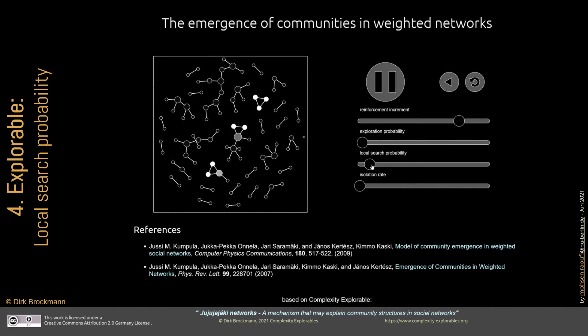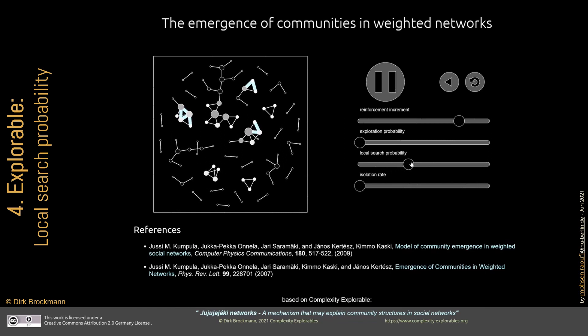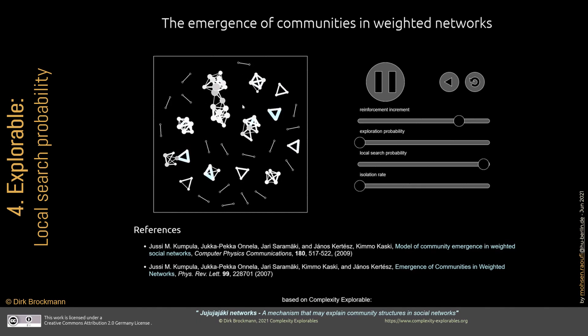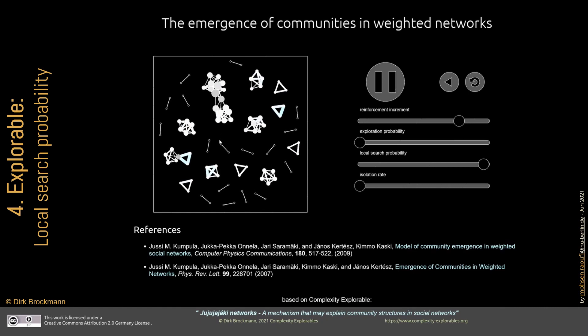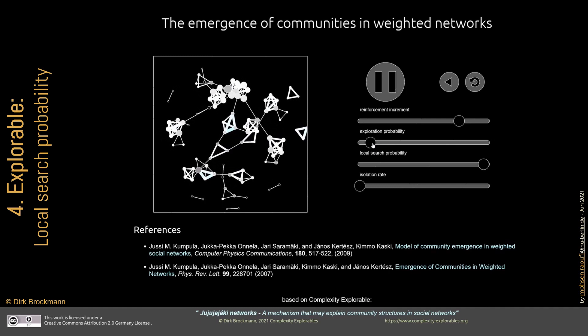Now we only enable the local search mechanism and disable global attachment. Remember that the local search mechanism reinforces links within communities and also establishes new links that were previously invisible. The links are getting thicker and turning blue, meaning that the ties are getting stronger. If I increase the local search parameter further, we see that the clustering coefficient increases and members within communities get closer, making the communities stronger. Now, if I increase exploration again, different communities connect to each other and the whole network is almost connected.